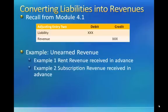We will now discuss two types of these adjusting entries: specifically, rent received at the beginning of a rental term, and subscription payments received in advance of firms sending magazines to subscribers.